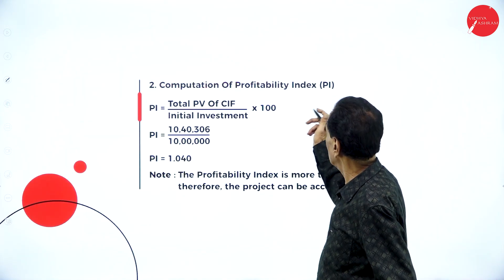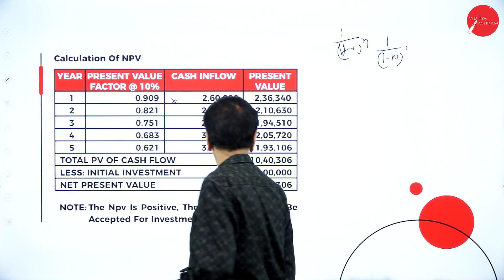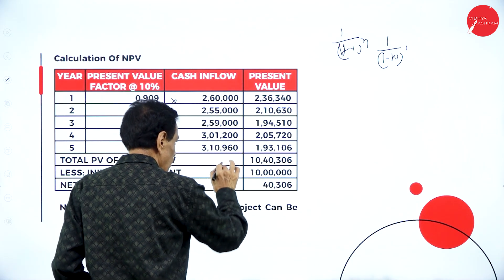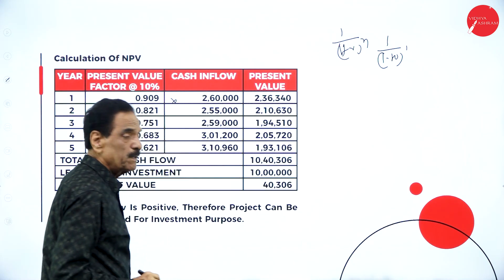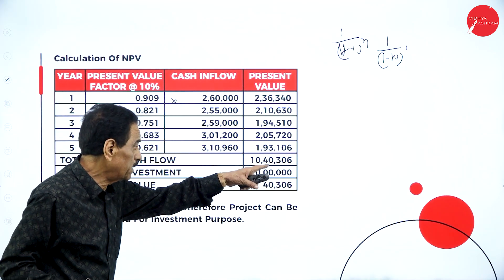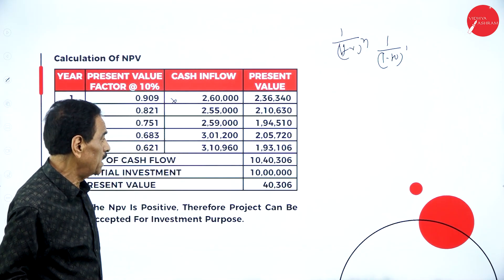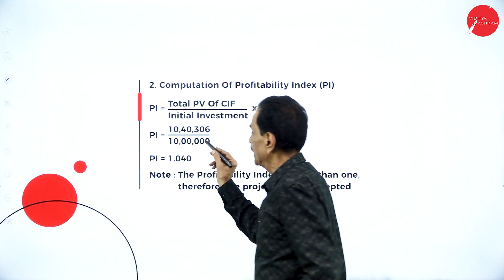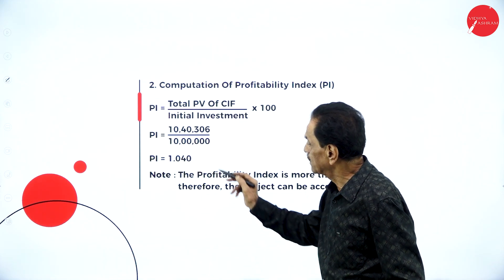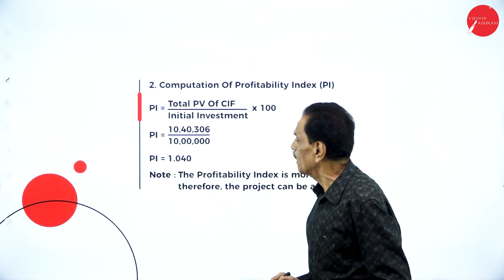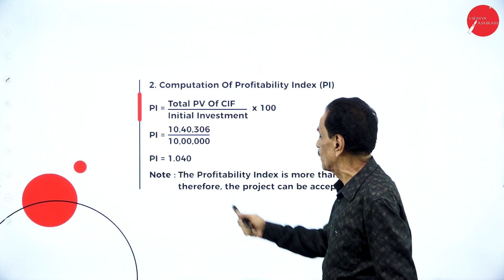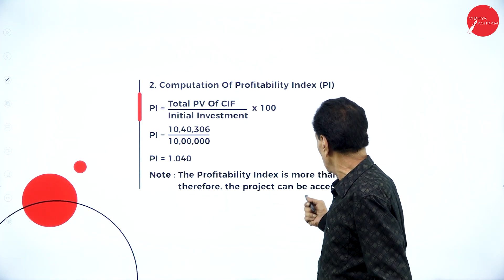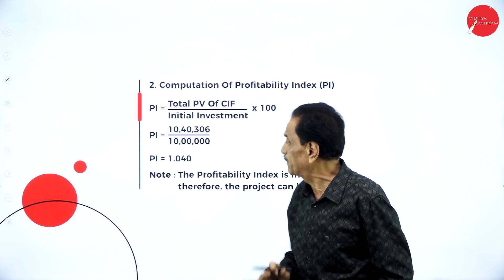Computation of Profitability Index: total present value of cash inflows divided by total cash outflow. That is 10 lakh 40 thousand 306 divided by 10 lakh, which works out to 1.040. Since the profitability index is more than 1, the project can be accepted.